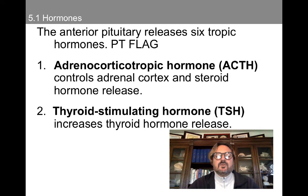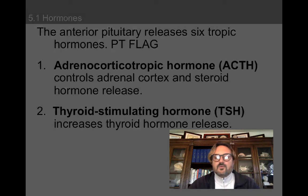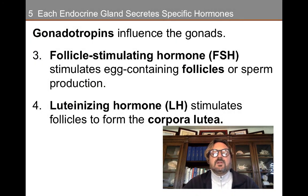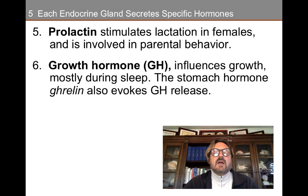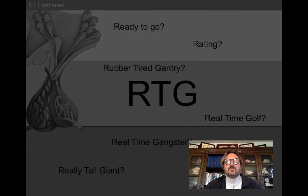We have ACTH — adrenocorticotropic hormone — which controls the adrenal cortex and steroid hormone release. Another anterior pituitary hormone is thyroid-stimulating hormone, which increases thyroid hormone release. We also have follicle-stimulating hormone, which stimulates egg-containing follicles or sperm production. We have luteinizing hormone, which stimulates follicles to form the corpus luteum. We have prolactin, which stimulates lactation in females and is involved in parental behavior. And then finally, growth hormone, which influences growth mostly during sleep, and the stomach hormone ghrelin also evokes growth hormone release.